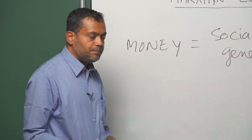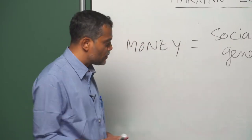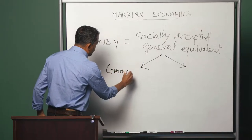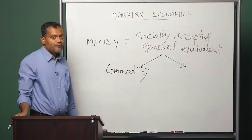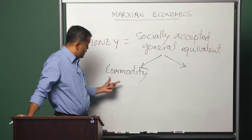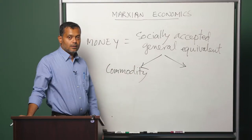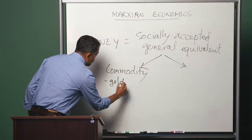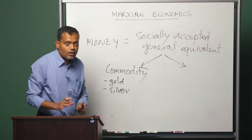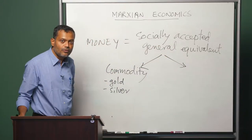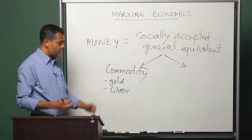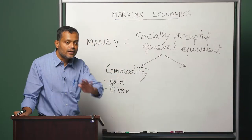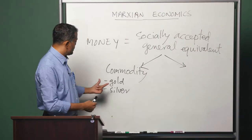Once we have understood money, we can also understand that money can take different forms. There are two important forms to keep in mind. One is the commodity form of money. This was the form of money that prevailed for long periods of time, all the way to the middle of the 20th century. When we are in a commodity money system, one commodity like gold or silver separates out from the world of commodities and becomes the socially accepted general equivalent. For instance, when gold was the money commodity, units of gold were used to express the value contained in all other commodities, so pricing was done in terms of units of gold.